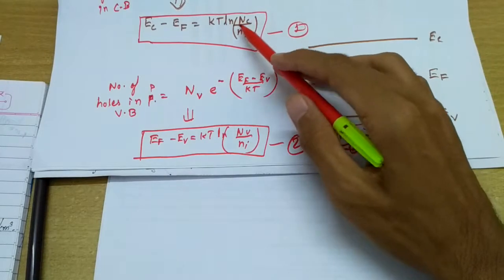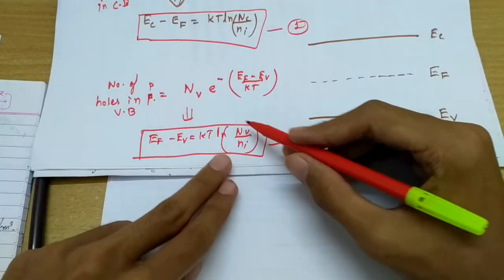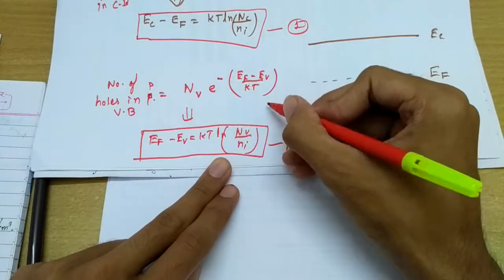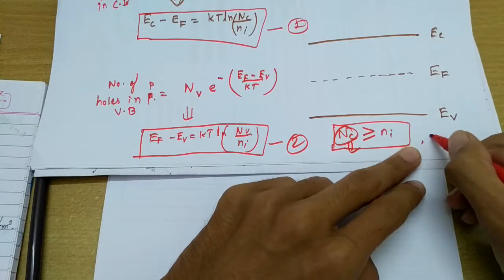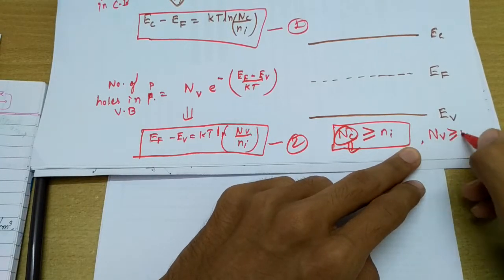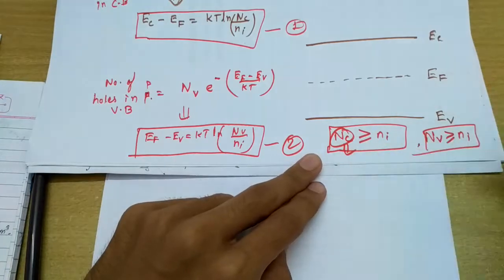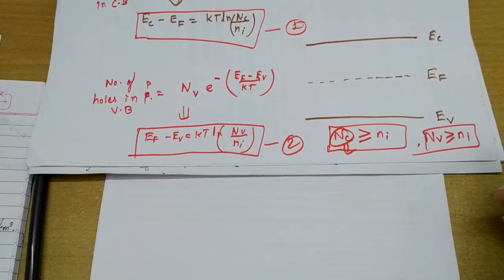Similarly, it is intuitive that nv should be greater than or equal to ni as well. nv is the effective density of states in the valence band.